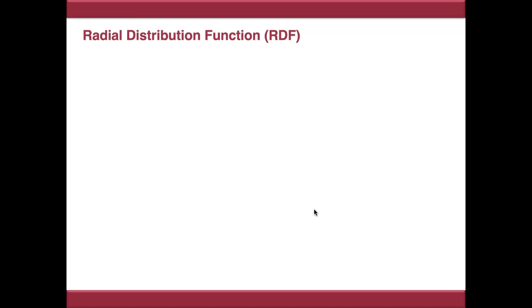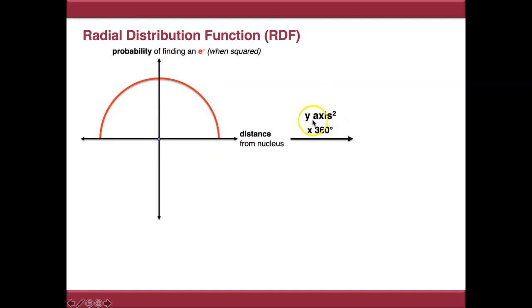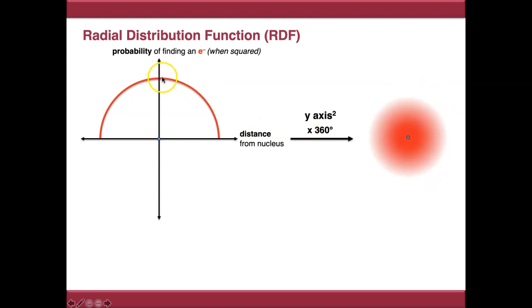Each orbital is described by what's called a radial distribution function — a mathematical equation describing where electrons are likely to be in that orbital. Taking our nucleus, across the x-axis we have distance from the nucleus, and the y-axis gives the probability of finding an electron when squared. If we draw a radial distribution function and square the y-axis, then rotate through 360 degrees to make a three-dimensional shape, we end up with something spherical. There's a high probability of finding an electron close to the nucleus, which drops away precipitously.